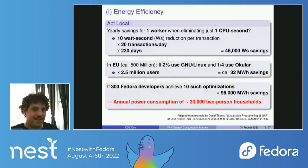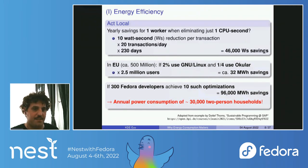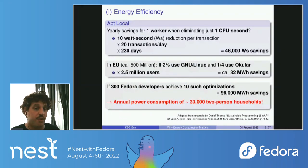If we convince 300 Fedora developers and other free software communities to achieve just 10 of those optimizations, we're talking about 96,000 megawatt-hours of savings — roughly the equivalent of the annual power consumption of 30,000 two-person households. The numbers add up very quickly.